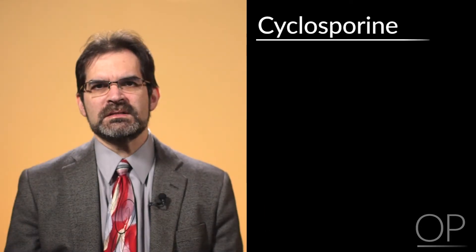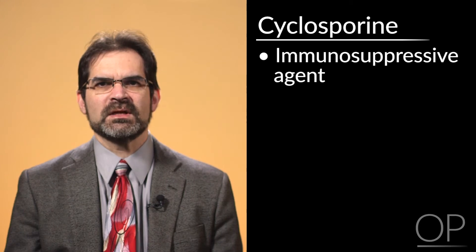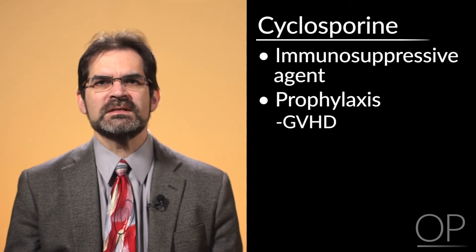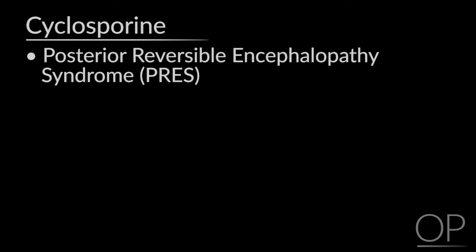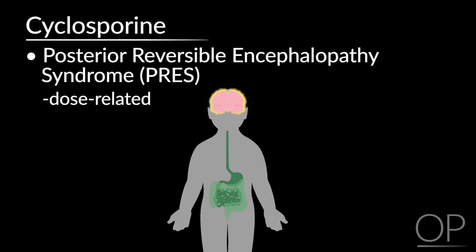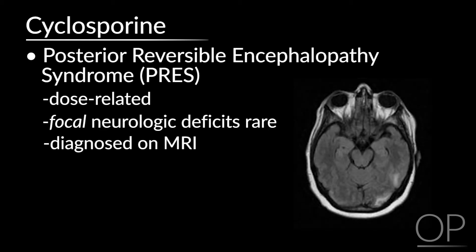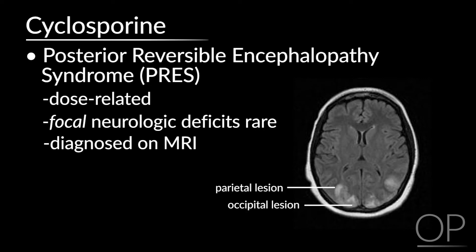Another cause for seizure in this situation is cyclosporine. Cyclosporine is an immunosuppressive agent — not a conditioning agent — and it is used extensively in pediatric stem cell transplant to prophylax against graft-versus-host disease. It's also used in transplant rejection. PRES, or posterior reversible encephalopathy syndrome, is usually but not always dose-related. Symptoms include headache, nausea, vomiting, and confusion. Often patients will complain of decreased vision before progressing to seizures. Focal neurologic deficits are rare. It is diagnosed on MRI with T2-weighted hyperintense lesions affecting the cortical and subcortical areas of the occipital and parietal lobes.